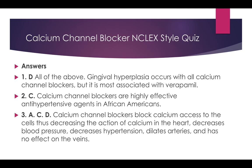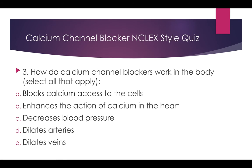The answers: number one is D — all of the above — because gingival hyperplasia occurs with all calcium channel blockers, but it's most associated with verapamil. Number two is C — calcium channel blockers are highly effective antihypertensive agents for African Americans. Number three: the answer is A, C, and D — it blocks calcium access to the cells, decreases blood pressure, and dilates arteries. It does not have an effect on the veins, and it decreases the action of calcium in the heart.